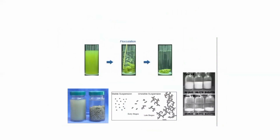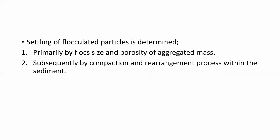A stable suspension shows floccules of sedimentation where particles are equally distributed. When sedimentation is complete, the upper part is the continuous phase. Floccules are aggregates of particles; when flocculation is excessive, stability is lower. Settling of flocculated particles is determined primarily by the size of the floccules and the porosity of the aggregated mass, followed by compaction and rearrangement within the sediment.